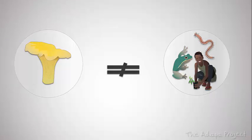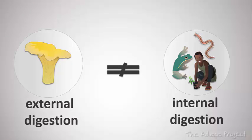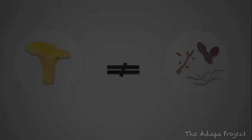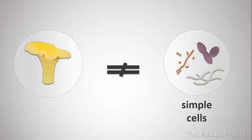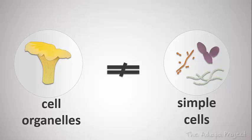Fungi are not animals because animals digest their food internally, whereas fungi digest their food externally instead. Fungi are also not bacteria, because fungi have complex cells with cell organelles such as nuclei, mitochondria and endoplasmic reticula. Fungi are eukaryotes, as are plants and animals.